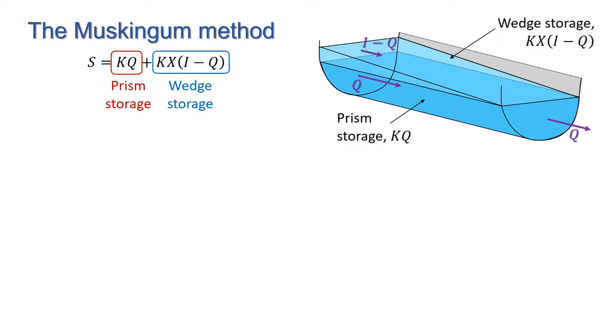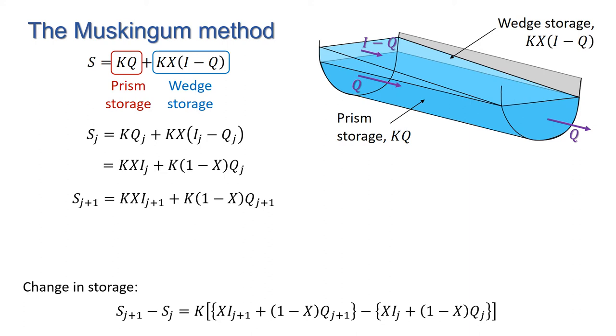Using our discretized domain, we have at time step j: s_j equals kq_j plus kx times (i_j minus q_j), which can be rearranged in the form kx·i_j plus k(1 minus x)q_j. The storage at time step j plus one is thus given by s_(j+1) equals kx·i_(j+1) plus k(1 minus x)q_(j+1). Subtracting one from the other gives us an expression for the change in storage.